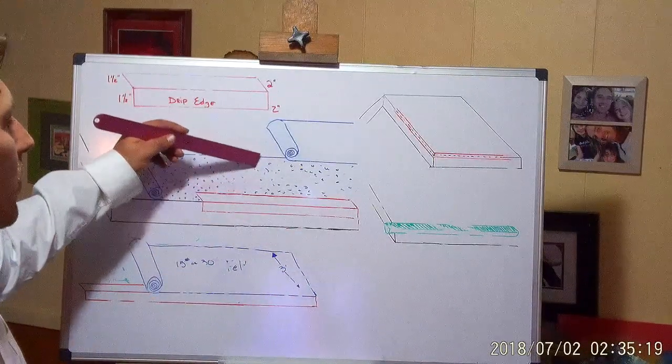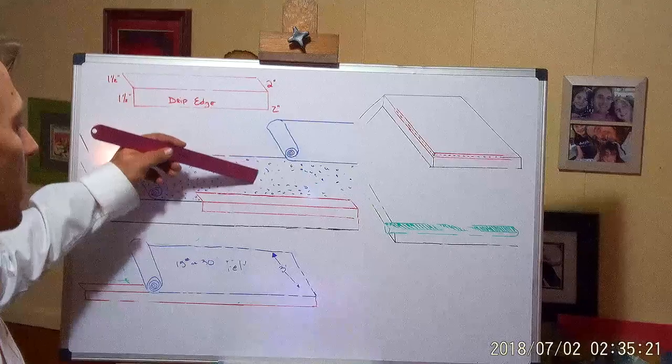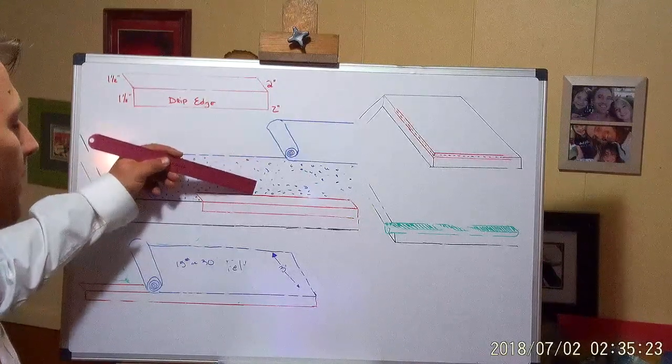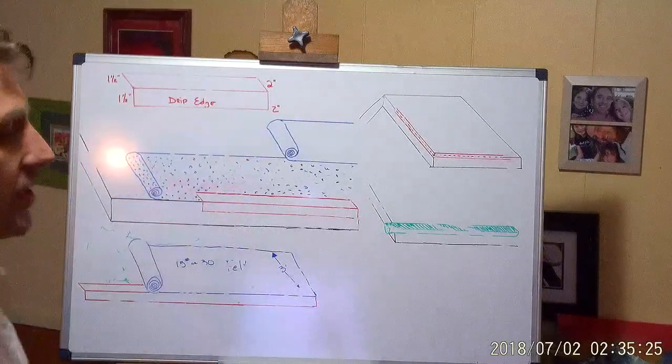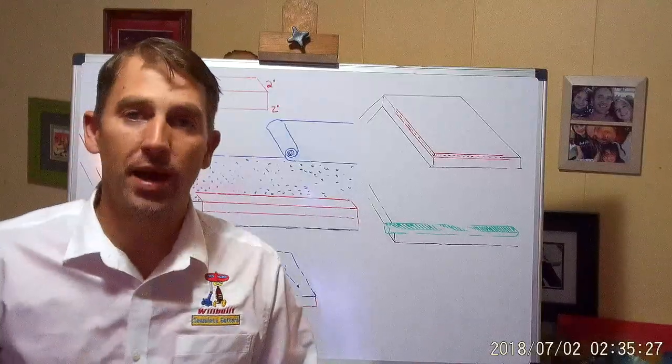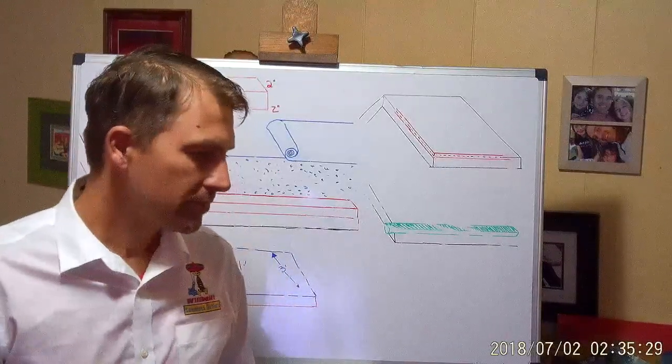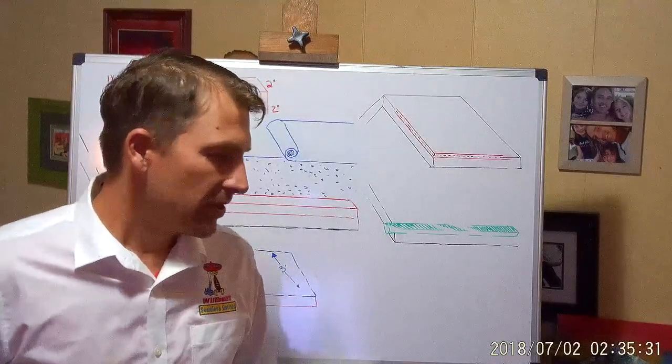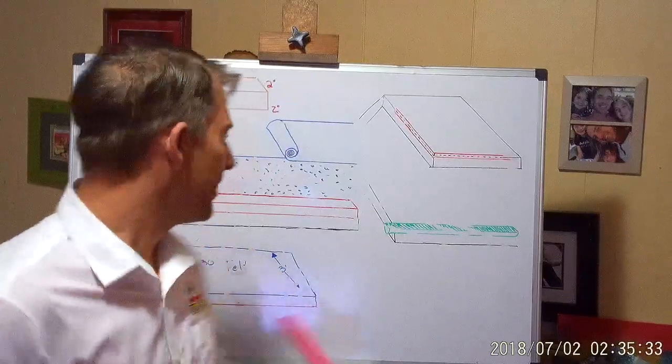If you were to pour water right here, water would run down, run underneath the felt, between the drip edge and the fascia, and that's where you get your problem.